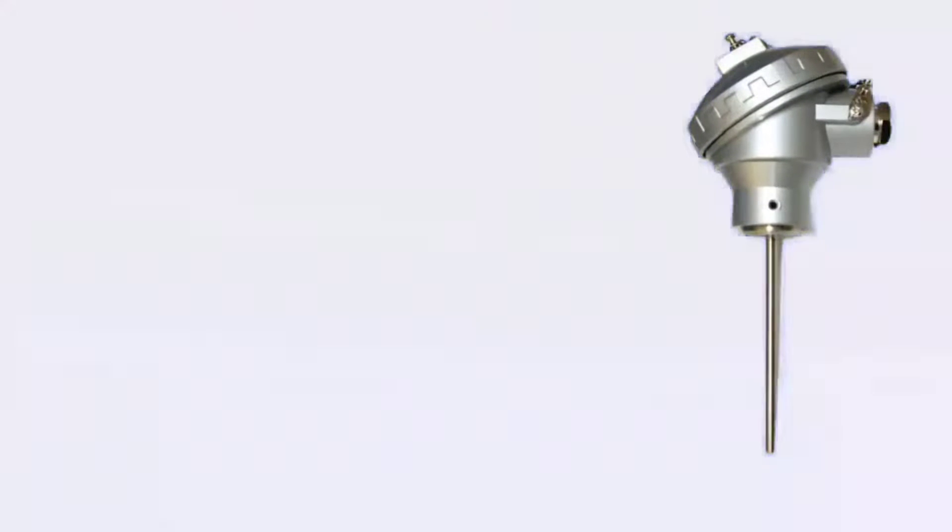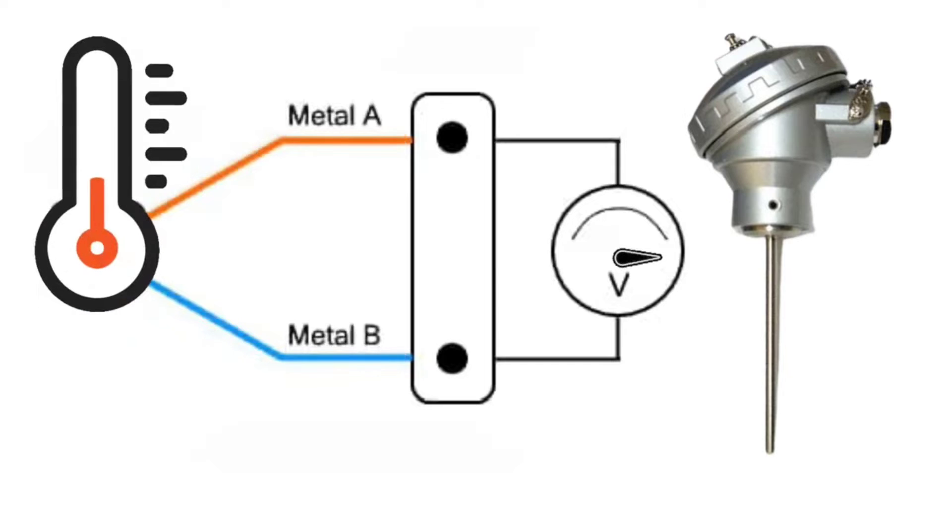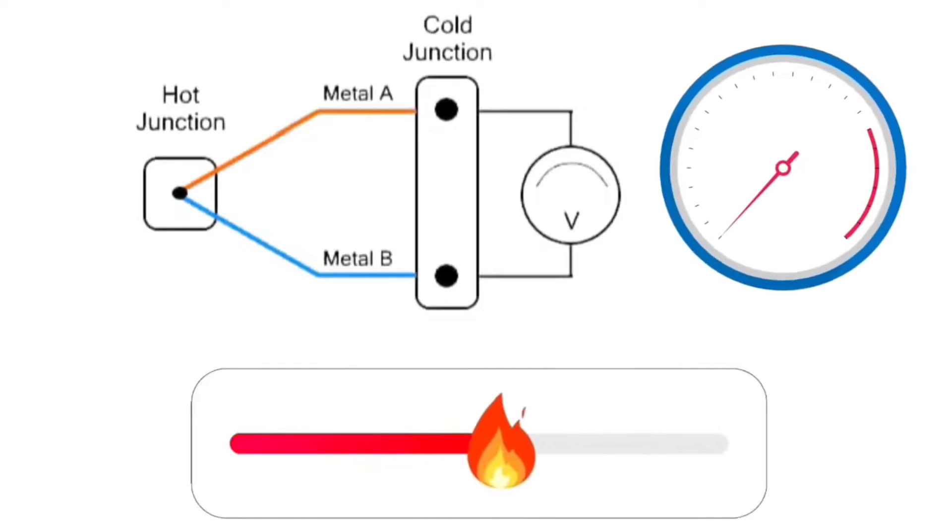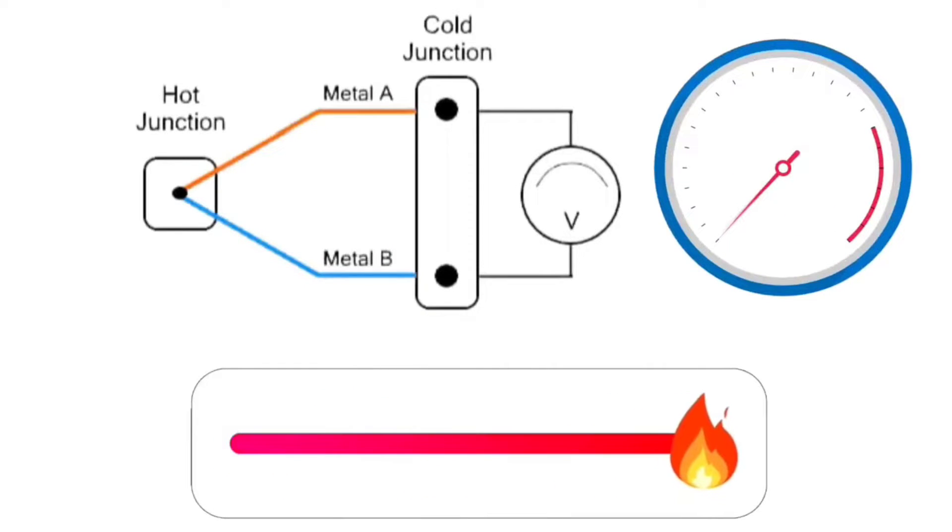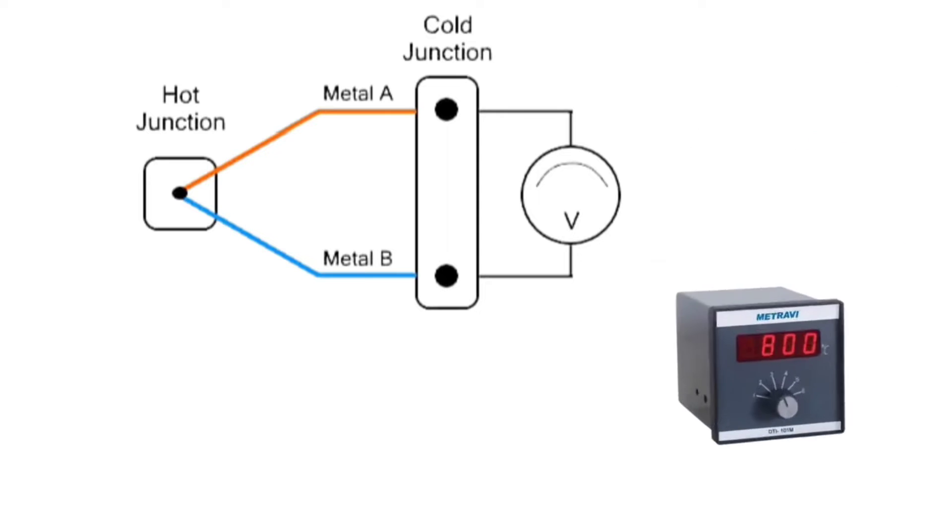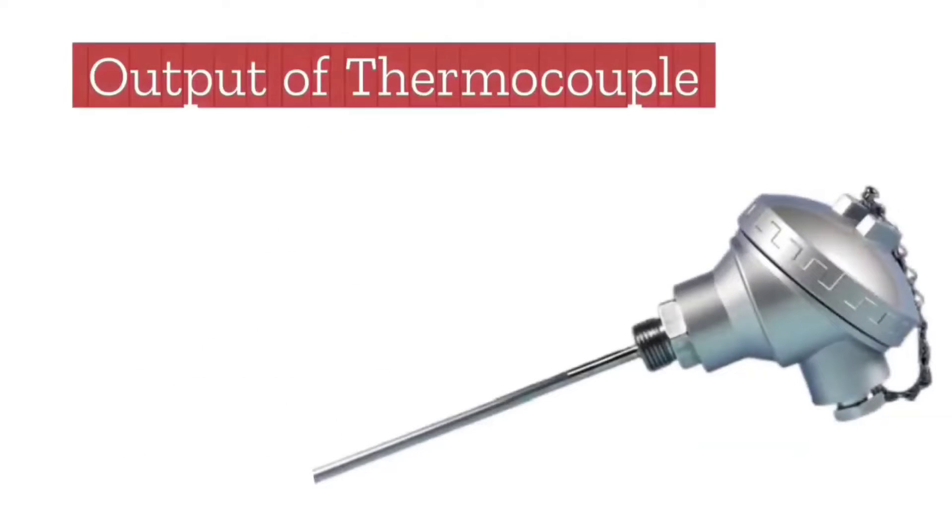Thermocouple is an instrument where two different metals are joined at two junctions. By detecting the generated voltage, it measures the temperature. That is why it is also called a temperature sensor. As the temperature changes, the voltage produced by the thermocouple also changes proportionally.